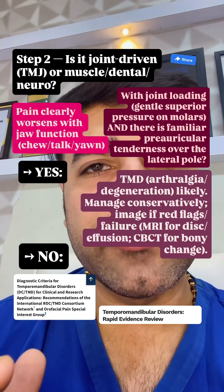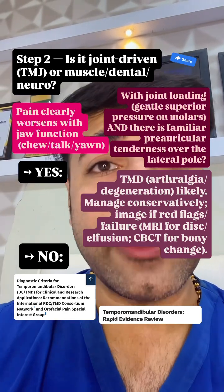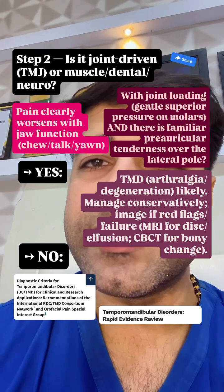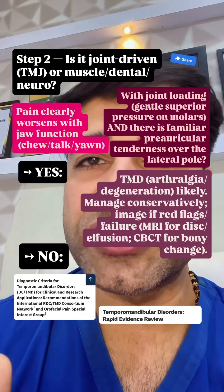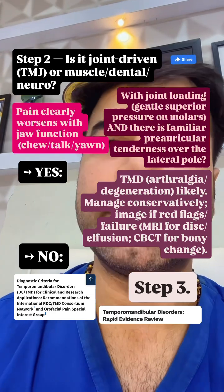Manage conservatively. Imaging is needed if red flags are present: MRI for disc or effusion, CBCT for bony changes. If no, go to Step 3.